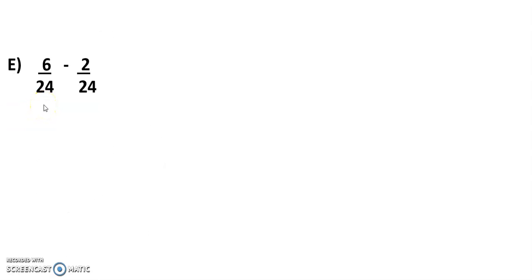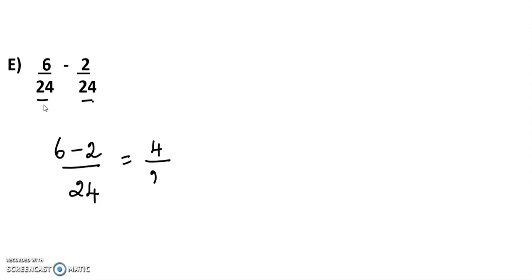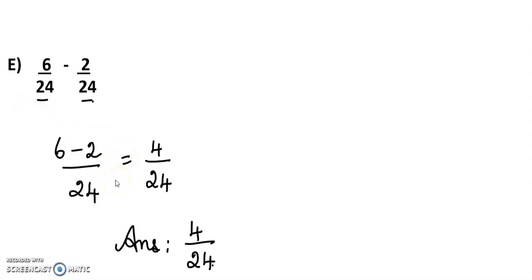Next: 6/24 minus 2/24. It is also a like fraction, so we subtract the numerators: 6 minus 2 equals 4. The answer is 4/24. Thank you, children. To receive our online lessons, please press the subscribe button and you will get the latest updates.